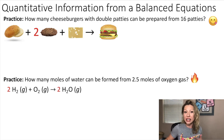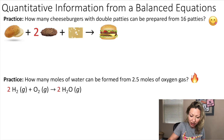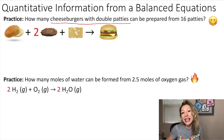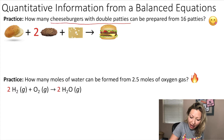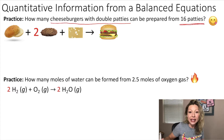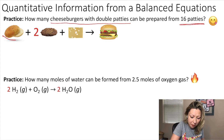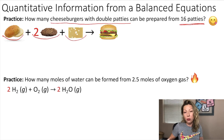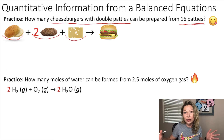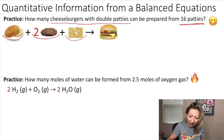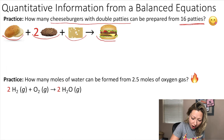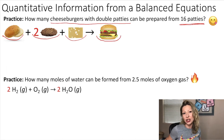So, our question is: how many cheeseburgers with double patties — yummy — can we prepare if we have 16 patties? Here is the recipe: we need one bun, we need two patties, we need a piece of cheese, we need a bunch of veggies, but we have a lot of that — it's not included in the recipe. And we will make one very tasty cheeseburger.